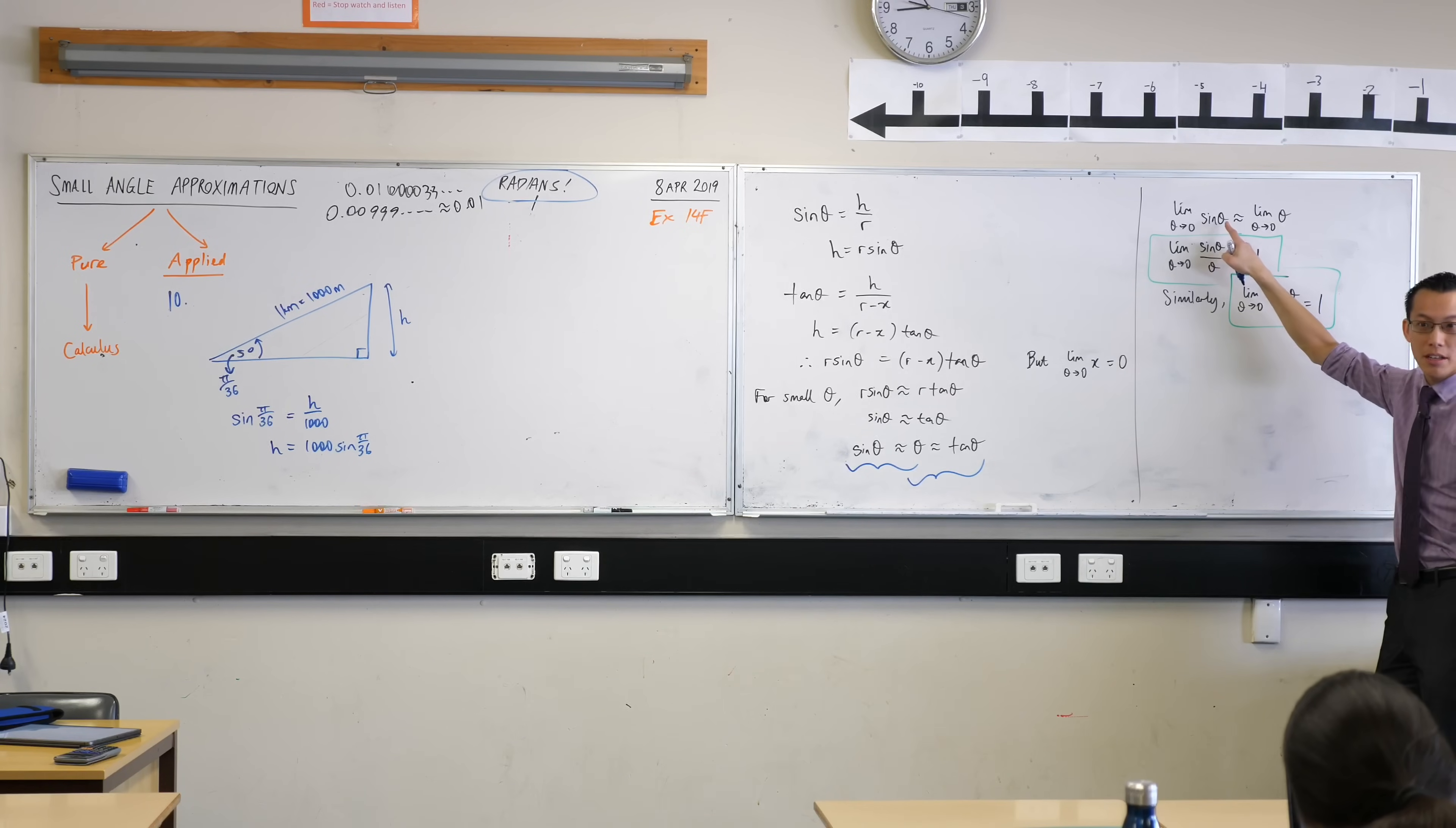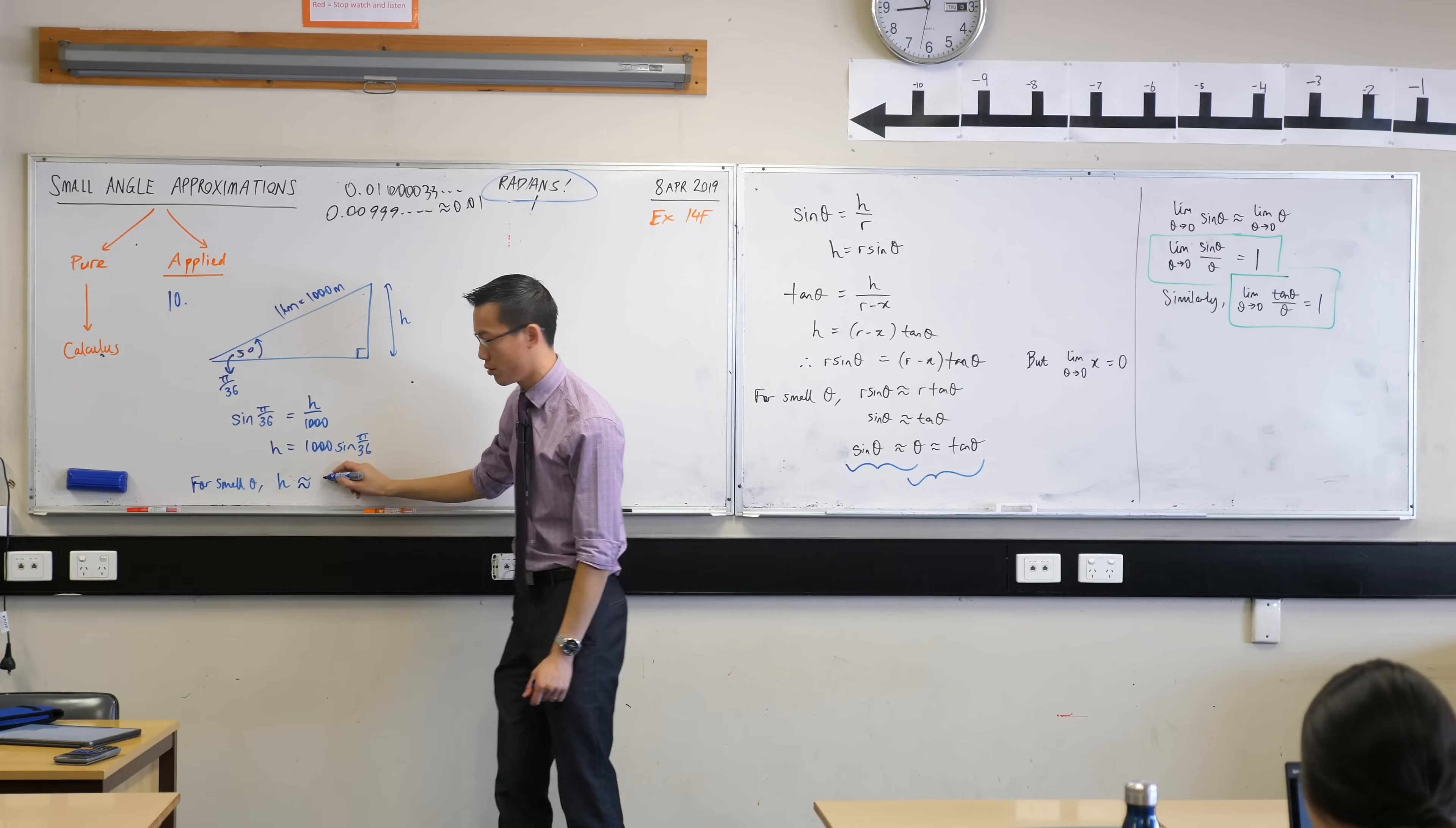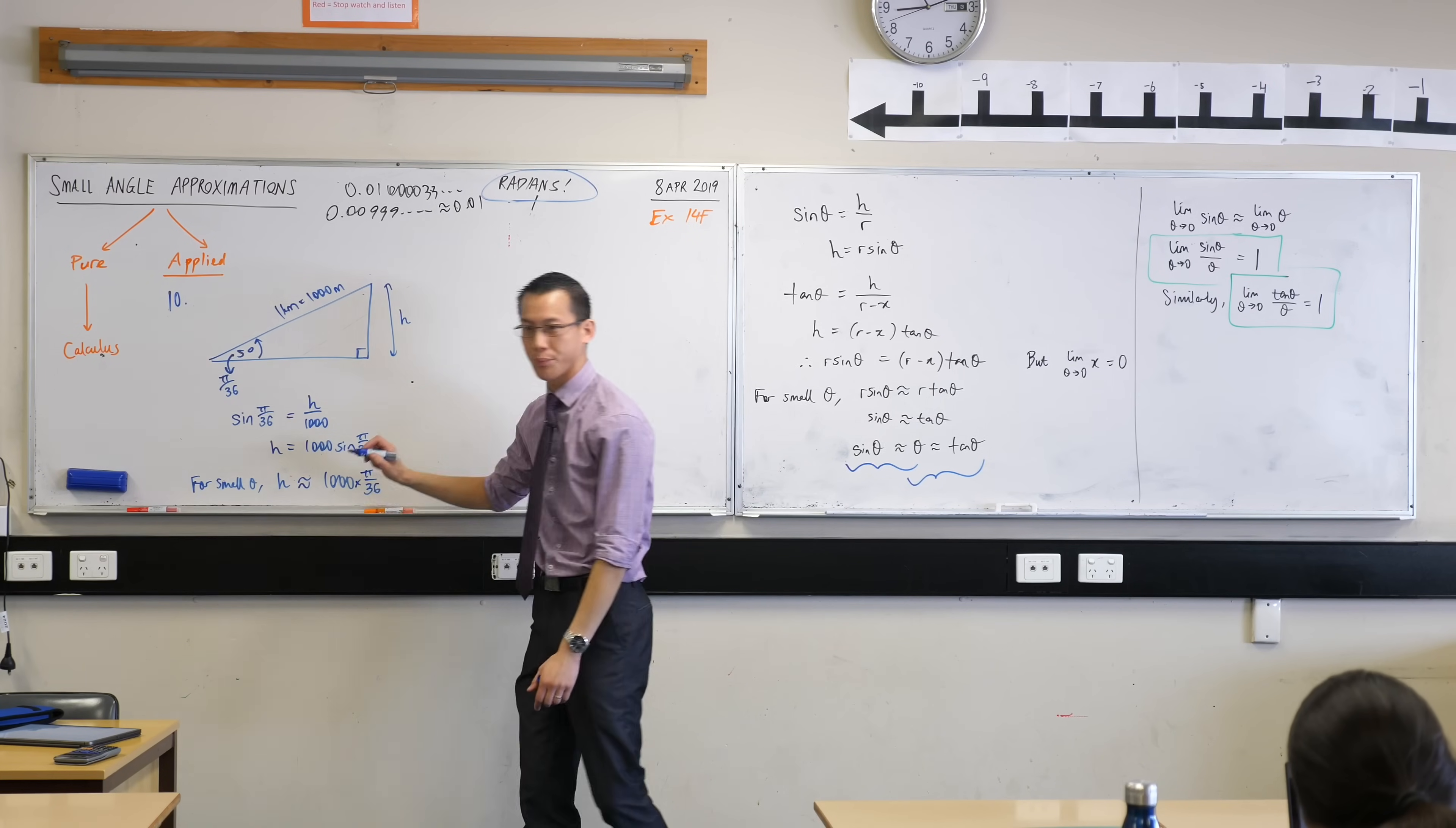And at this point here, I'm going to say, but I know that when you take the limit, sine theta and theta are basically the same thing. So I can say, for small theta, H is going to be, not exactly, we saw how we were slightly off, but close enough, approximately equal to one thousand, instead of sine theta, I'm just going to substitute theta, just pi over 36. I should write multiplication there, so it doesn't look like a mixed numeral.